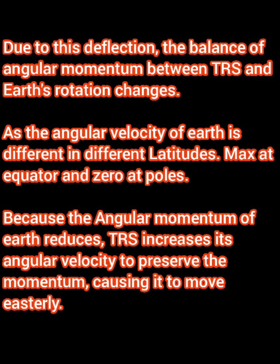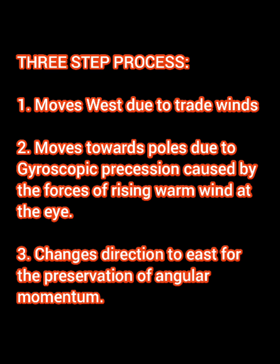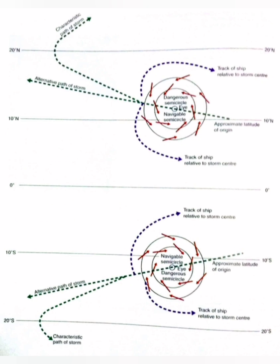So basically it's a three-step process: because of the trade winds it moves towards the west; then because of gyroscopic precession the TRS gets deflected towards the pole, driven by the force of the rising warm air on its axis; and because the latitude has changed there is a change in the earth's angular momentum, and to compensate, the TRS increases its speed and starts to move towards the east. There is a lot of physics involved, but if you remember the key points it'll be enough for the exam.